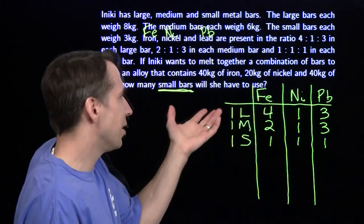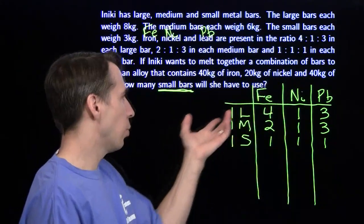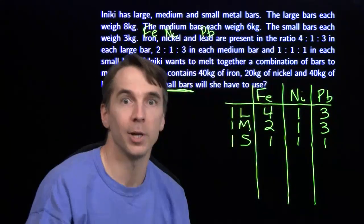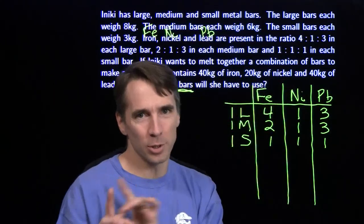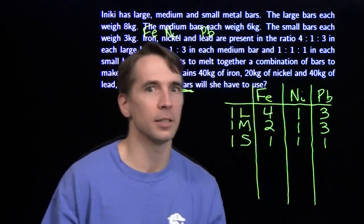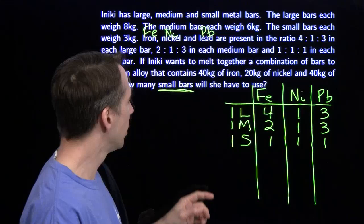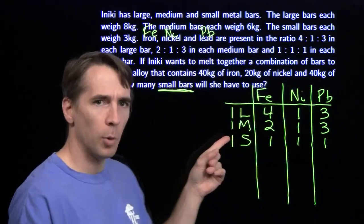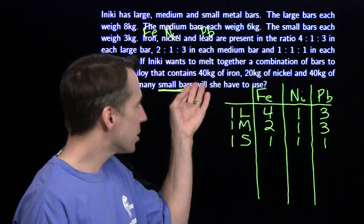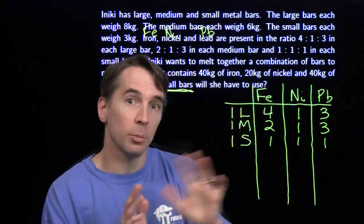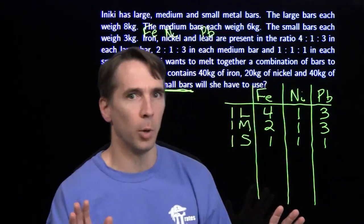We could say there's x large bars, y medium, z smalls, and start writing equations. It'll work eventually, but I like to look at the numbers, look for some clues, and see if I can simplify things. If we started just with small bars, we end up with the same amount of everything, and that's not what happens at the end. So we can't just use small bars.